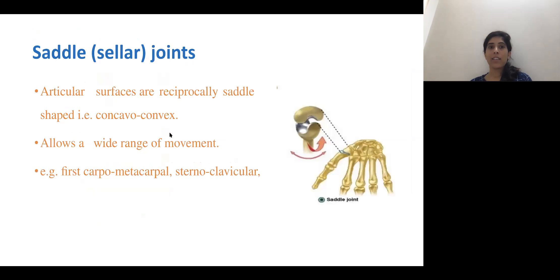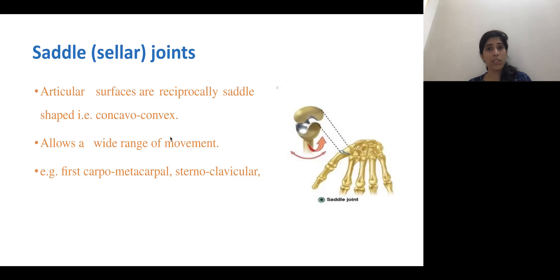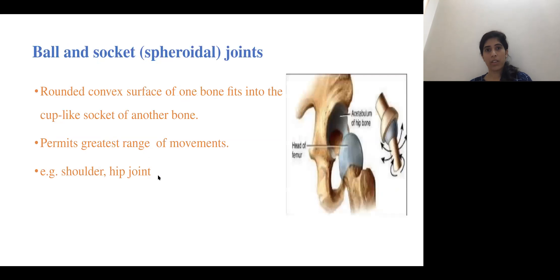The saddle type of joint has articulating surfaces that are reciprocally saddle-shaped — both concave and convex. The first carpometacarpal joint is an example of this type.